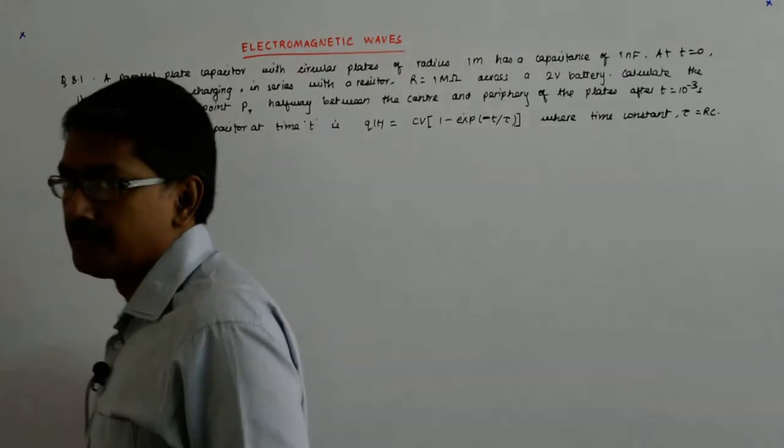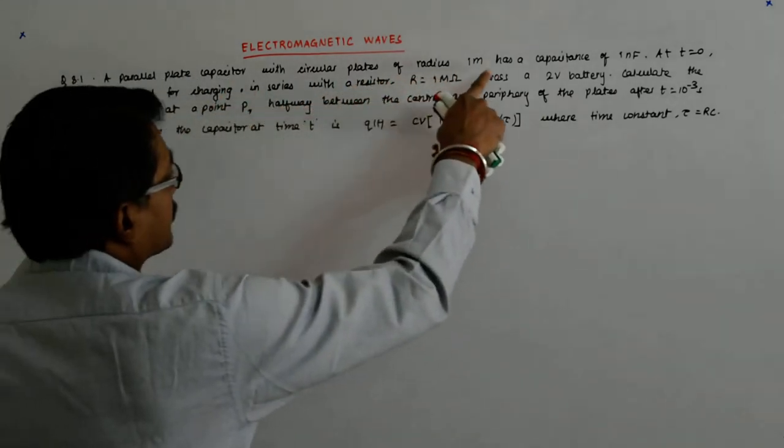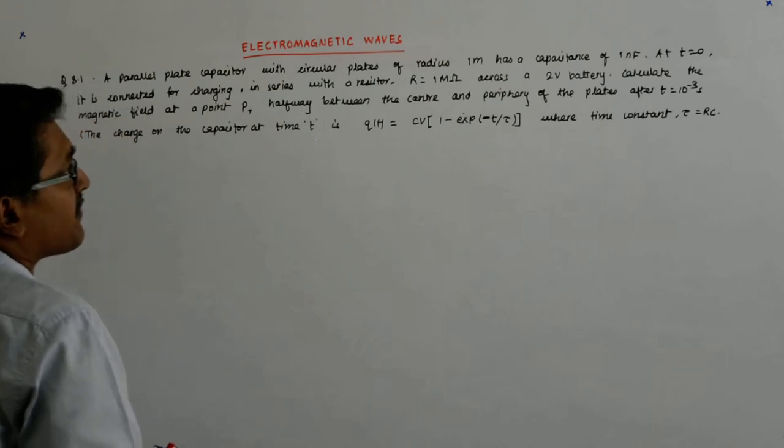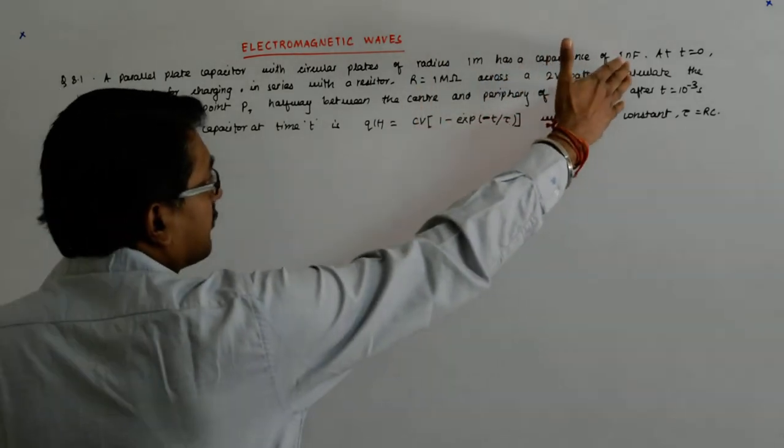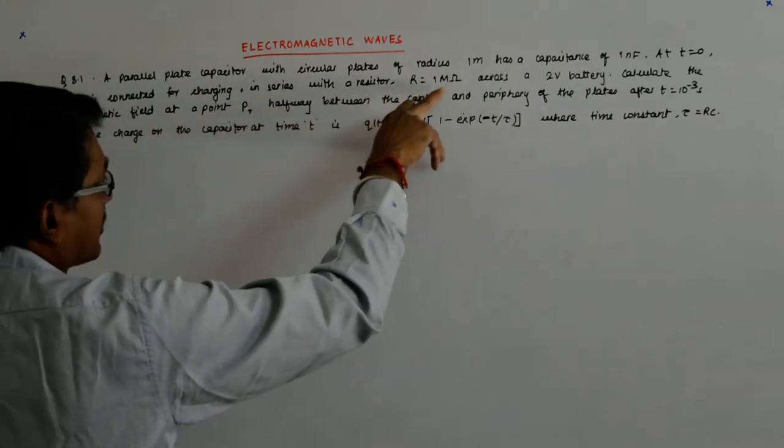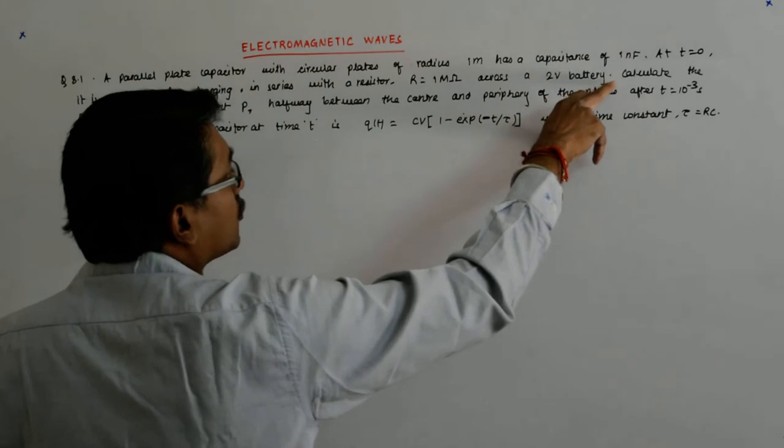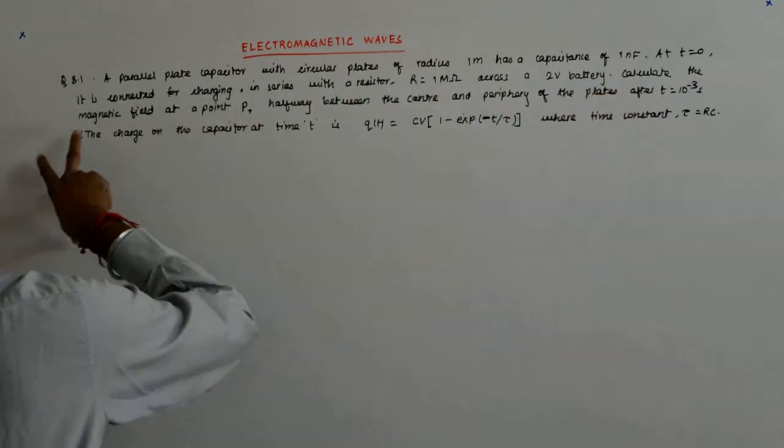Let us try to solve this problem where we have a parallel plate capacitor with circular plates of radius 1 meter which has a capacitance of 1 nanofarad. At t equal to 0, it is connected for charging in series with a resistor of 1 megaohm across a 2 volt battery.